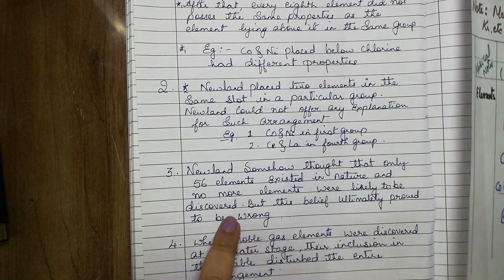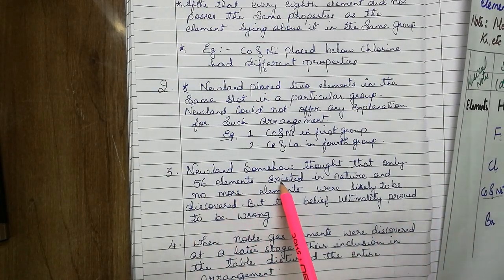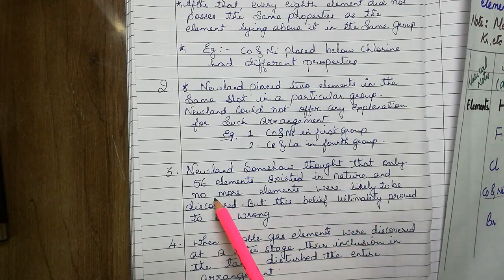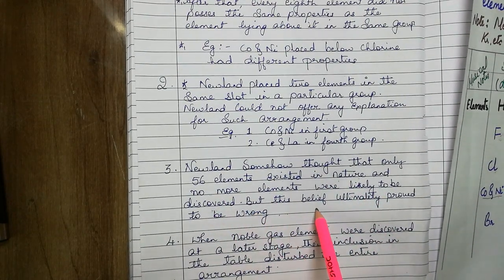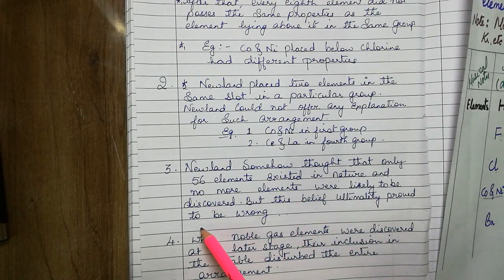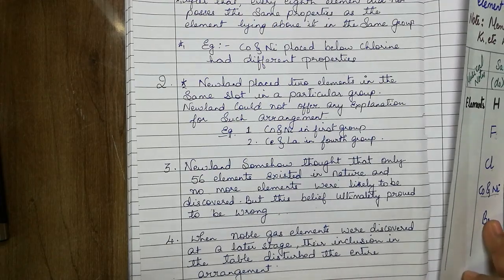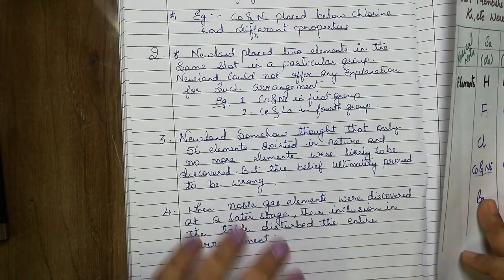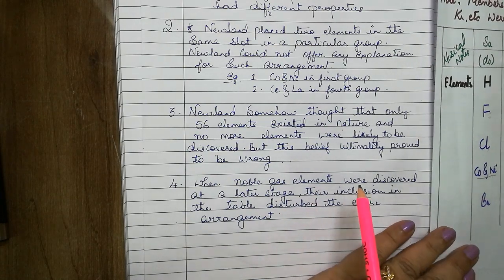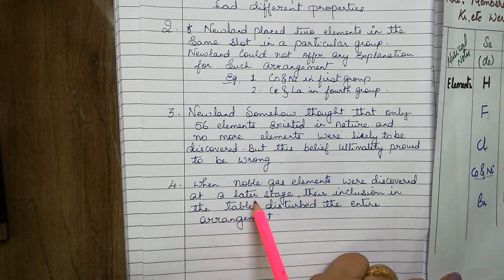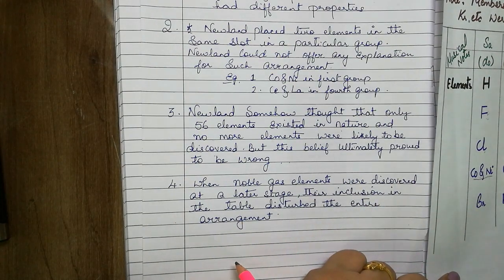Next, Newland somehow thought that only 56 elements existed in nature and no more elements were likely to be discovered. But this belief ultimately proved to be wrong. Now we are studying 118 elements. So it was true. When noble gas elements were discovered at a later stage, their inclusion in the table disturbed the entire arrangement.